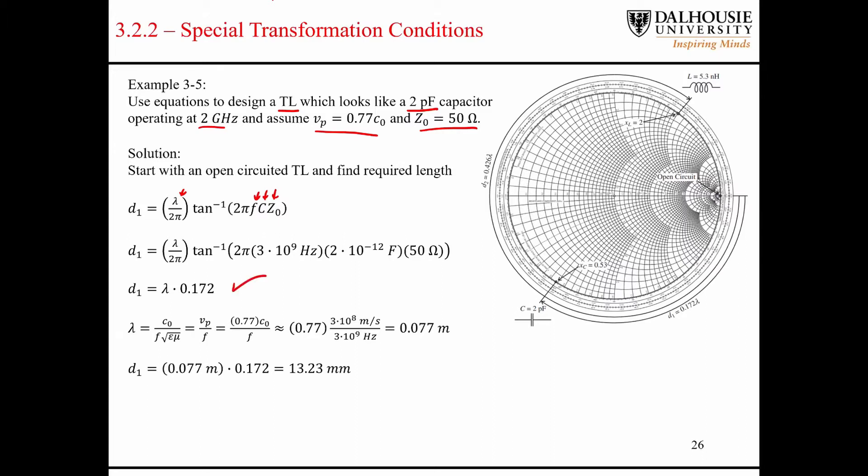We can use the phase velocity and the operating frequency to come up with the wavelength. So we plug that in, and we see that if we have a transmission line that is open-circuited on one end, and we make it 13.23 millimeters long, then the impedance seen looking into that transmission line will be capacitive, and we'll have a capacitance of 2 picofarads.